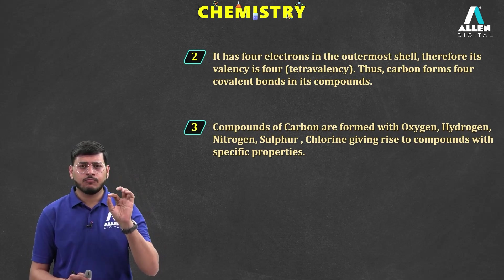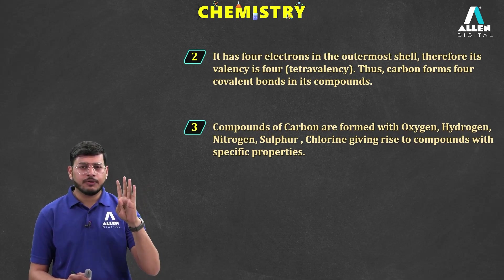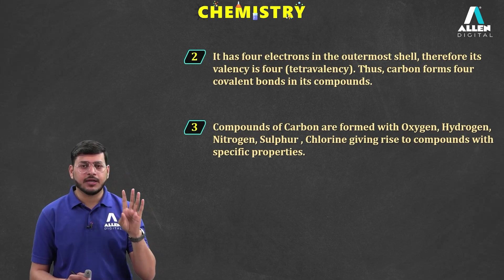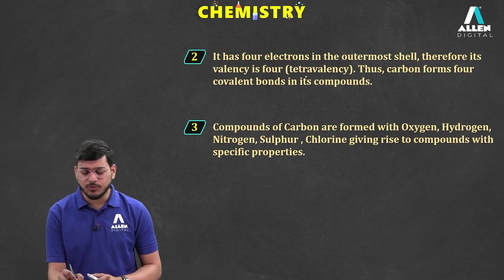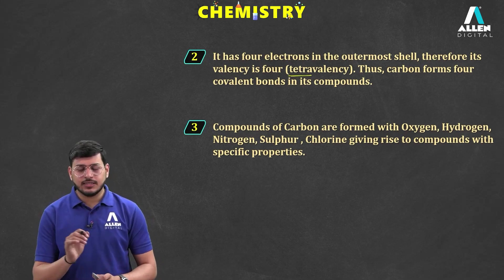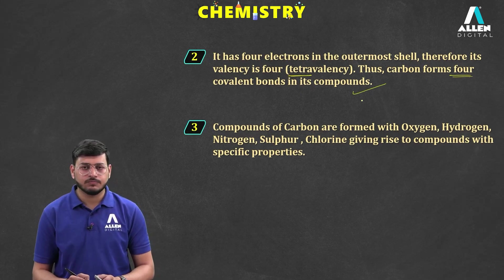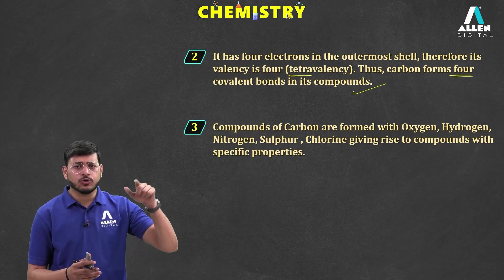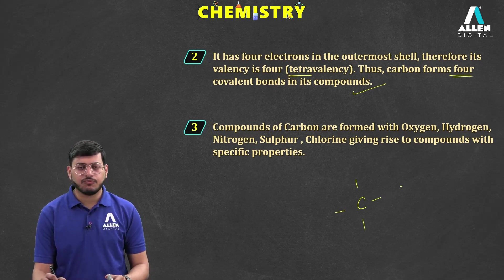For one we use mono, for two di, for three tri, and for four we use the prefix tetra — like in tetrapack. Carbon has a valency of four, so it forms four covalent bonds in its compounds. It can combine with four different elements, giving it the advantage of combining in many different ways.